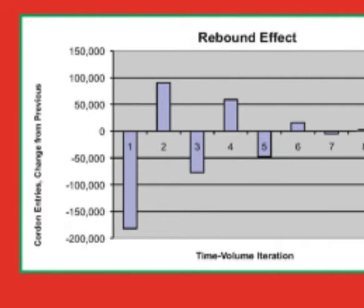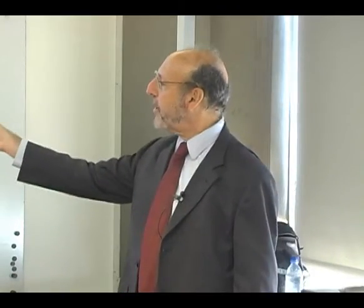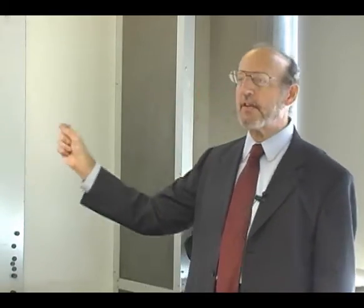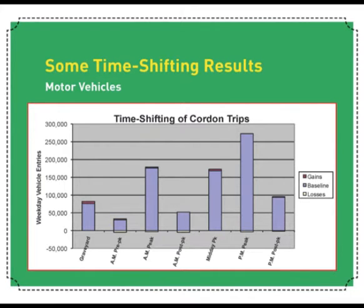We've had to take these oscillations through about ten iterations in the model to get to the point where the pendulum stops swinging. We're not resting our findings on the notion that everybody is going to shift their travel time to pay six dollars instead of nine, or three instead of six. But even this small amount of time shifting produces disproportionately positive gains in driver's time, because you're backing away from that hyper-congested peak period.